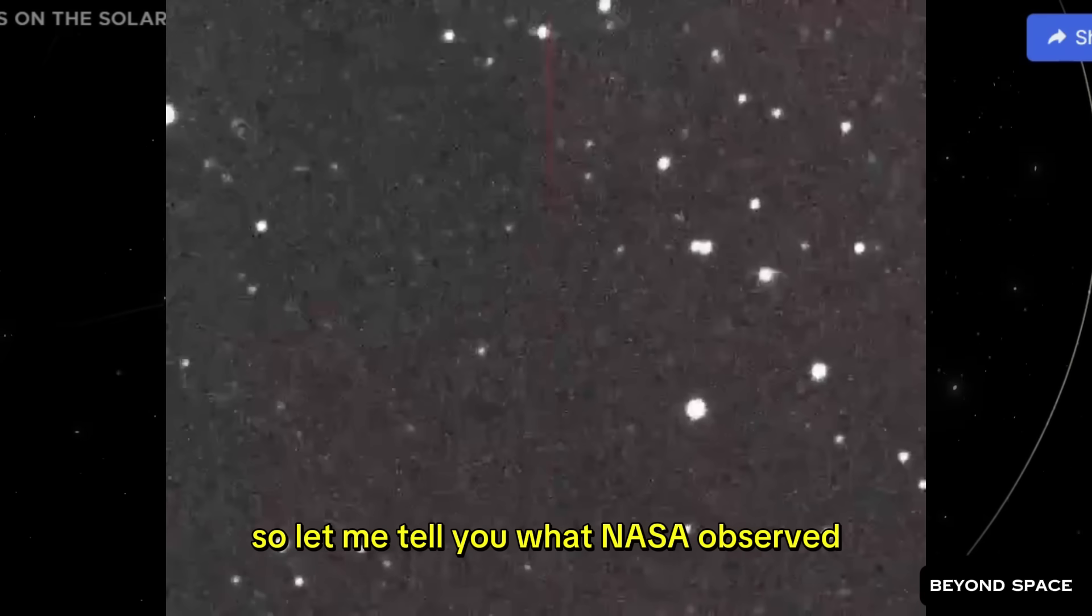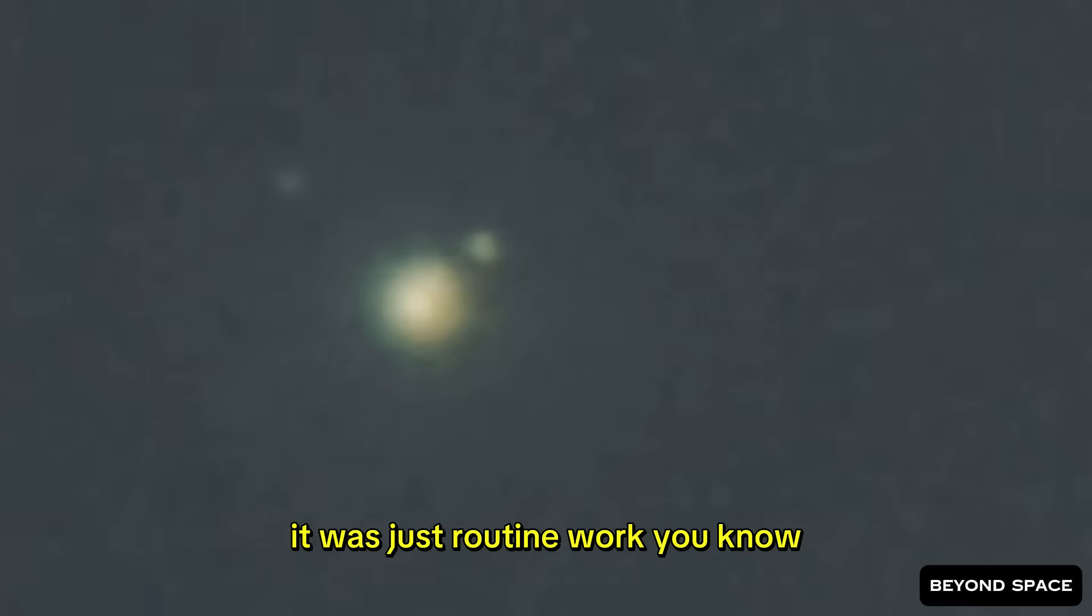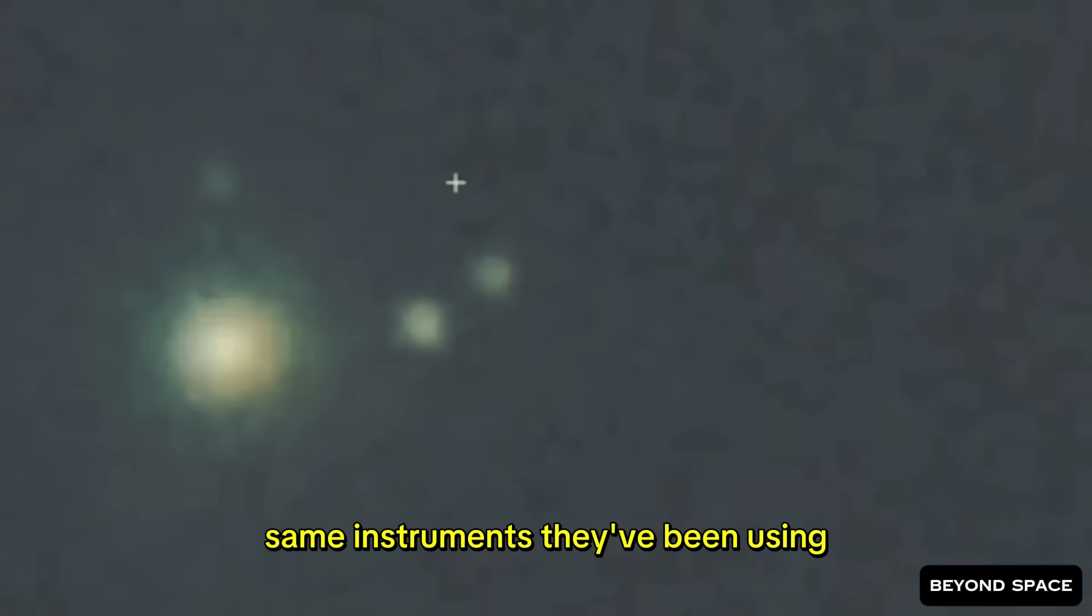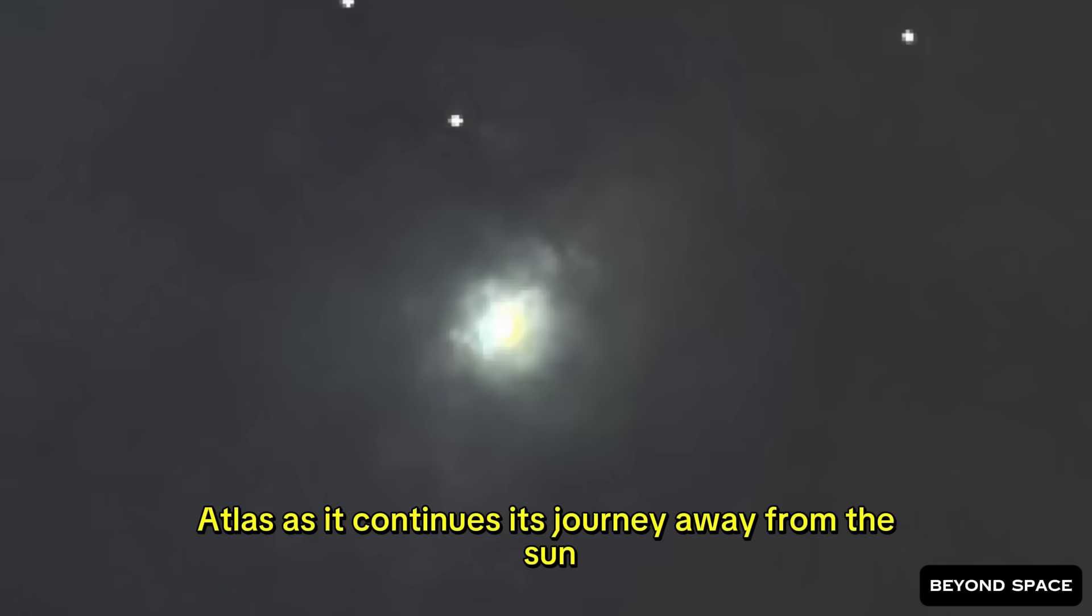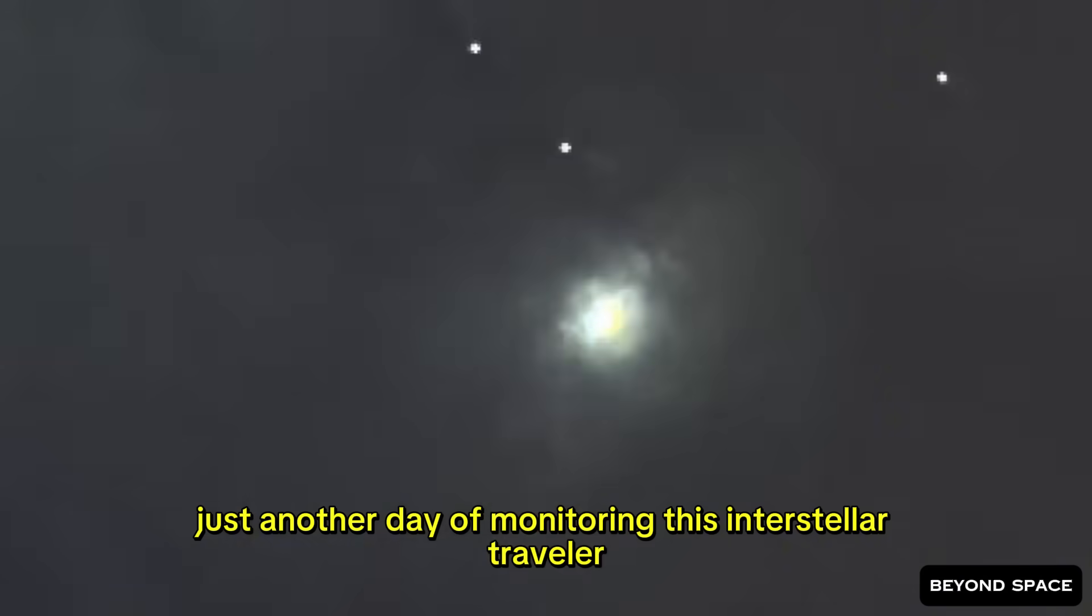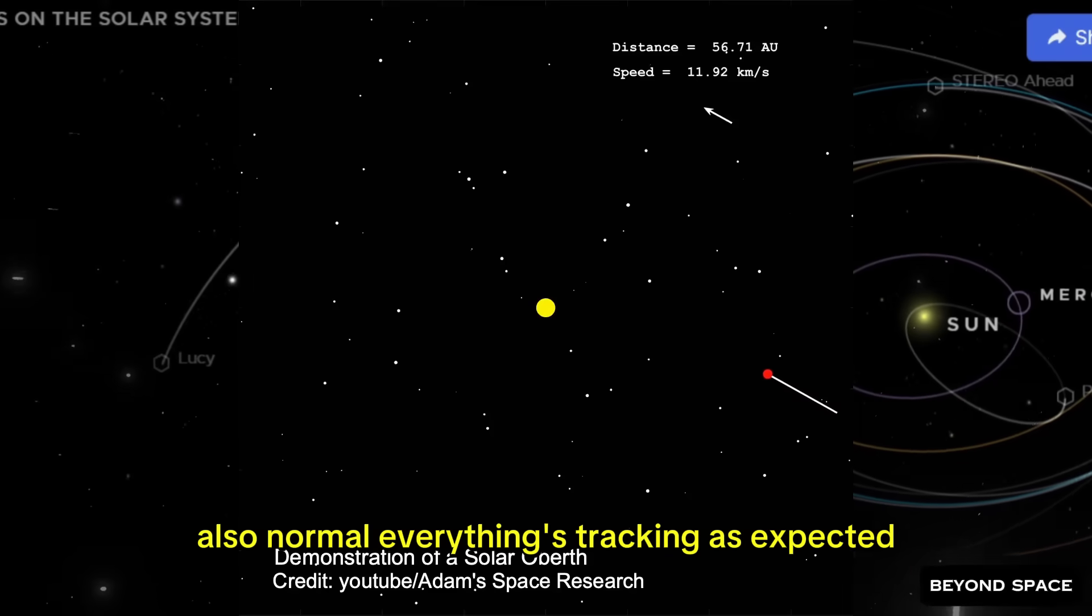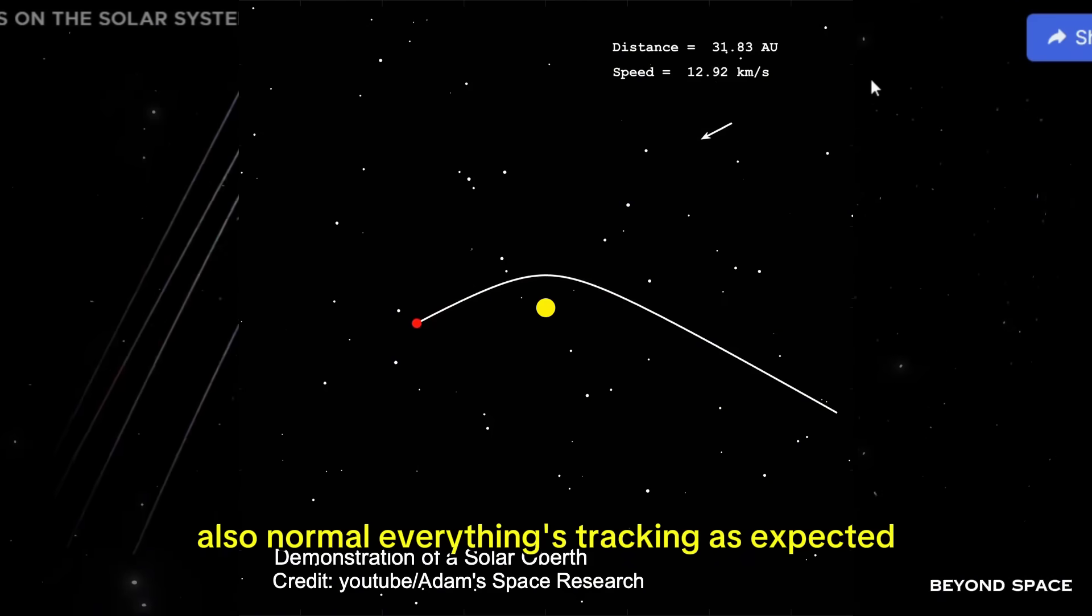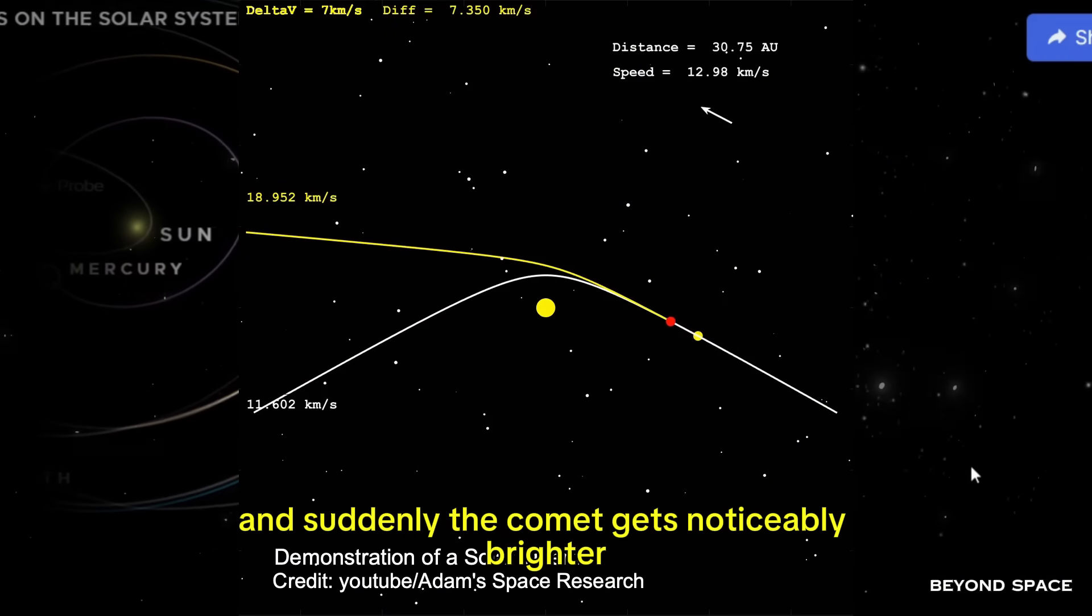So let me tell you what NASA observed. The thing is, this newest batch of data wasn't supposed to be anything special. It was just routine work. Same instruments they've been using, same timing between observations, same careful tracking of 3i Atlas as it continues its journey away from the sun. Just another day of monitoring this interstellar traveler. They're going through the frames. Frame 1 looks normal. Frame 2, also normal. Everything's tracking as expected, and then frame 3 comes up, and suddenly, the comet gets noticeably brighter.